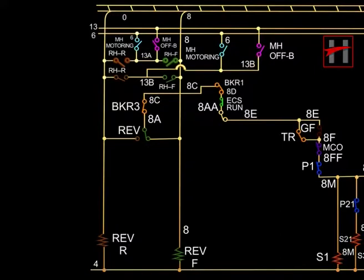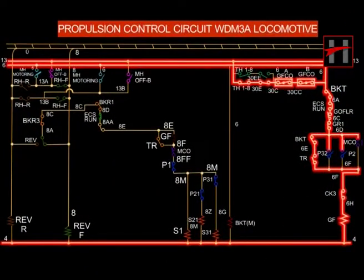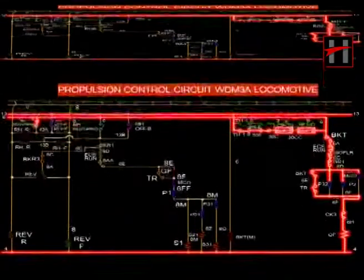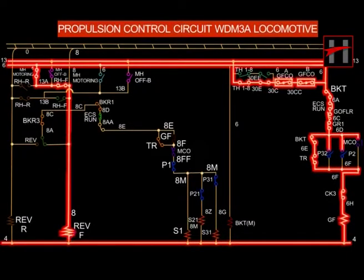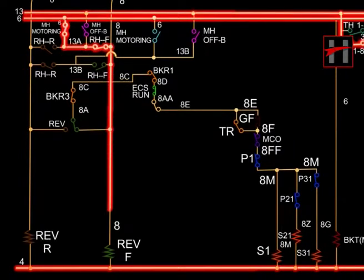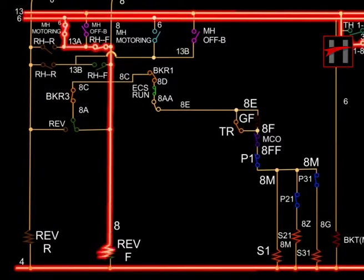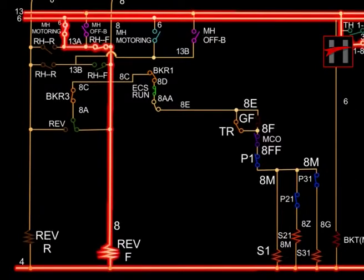When the throttle handle is in the idle position, the position of the reverser can be changed either to forward or reverse mode with the help of the reverser handle. Forward or reverse coil gets supply from cable number 6. When the reverser is in the forward position, the source of current is cable number 8. The current flows towards the left or the right control stand selector handle motoring interlock 6-13A and energizes the forward coil of the reverser via the forward direction interlock 13A-8 of the reverser.